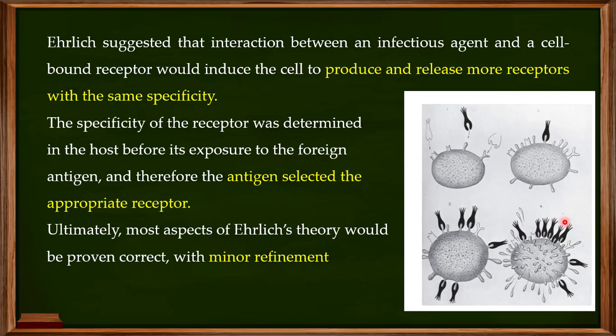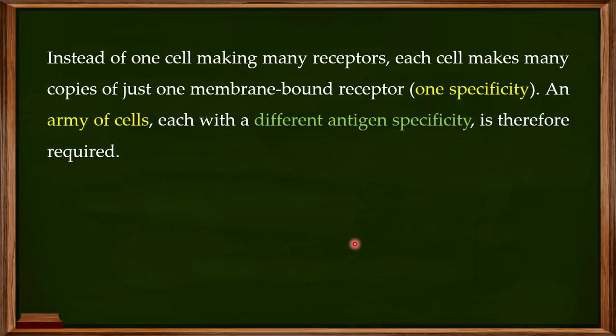Looking at Ehrlich's explanation, our current understanding is that most aspects of his theory were proven correct with minor refinements. He believed one cell produces different kinds of receptors, but we now believe that instead of one cell making many different receptors, each cell makes many copies of just one membrane-bound receptor — with a single specificity. This is a refinement of his theory: one cell produces only one receptor type, with monospecificity.